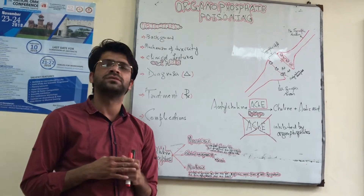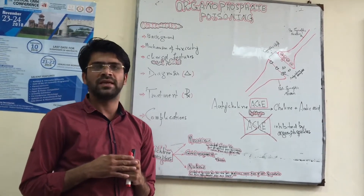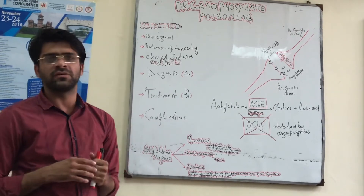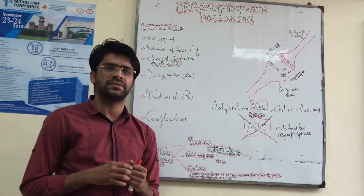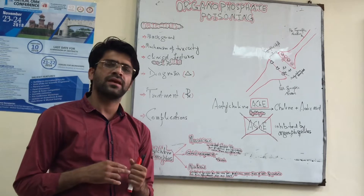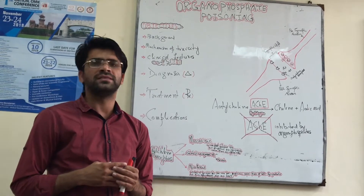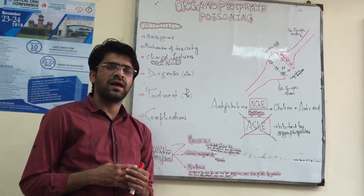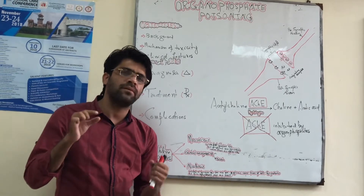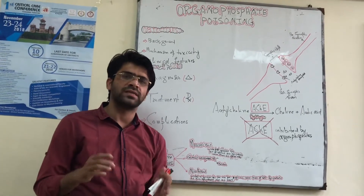Initially, Organophosphates were used as insecticides, but in the Second World War they were used as chemical weapons in the form of nerve gas agents. They are also used in the field of medicine to treat various diseases such as Myasthenia Gravis, Alzheimer's disease, Parkinsonism, and Schistosomiasis.